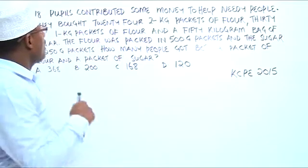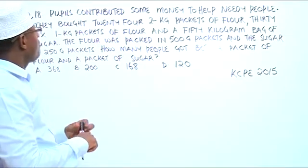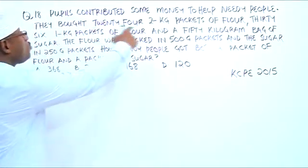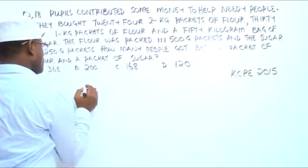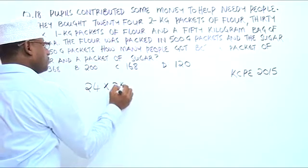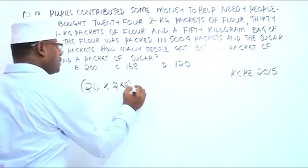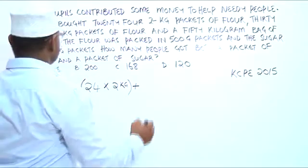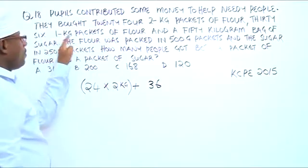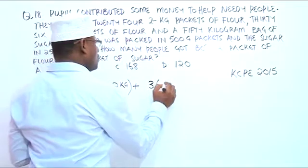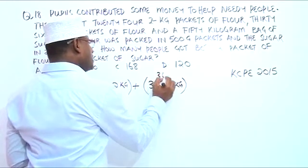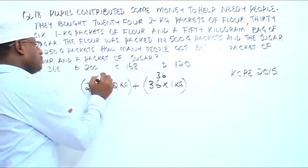Now let's see how many kilograms we have for the total flour. We have 24 2-kilogram packets, so we have 24 packets and each packet is 2 kilograms, plus 36 kilograms, because we have 36 1-kilogram packets — that's 36 times 1 kilogram, which makes 36 kilograms. So here we have 36, and 24 times 2 is 48.